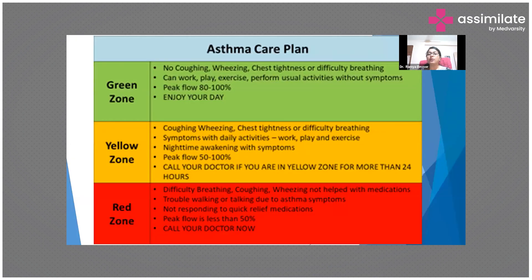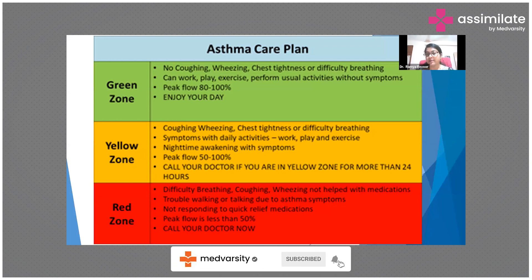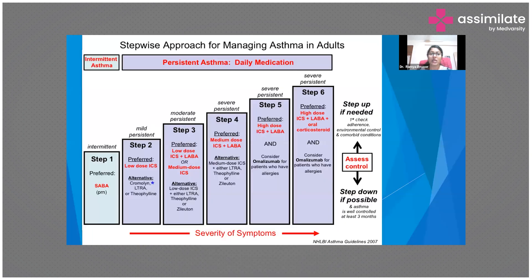For the asthma care plan based on zones: green zone means peak flow is 80–100% of personal best — the patient is doing well and can have a normal day. Yellow zone means some cough, wheezing, or nighttime awakening — if readings stay in the yellow zone for more than 24 hours, the patient should contact their doctor. Red zone means difficulty breathing and poor response to relief medication — the patient must go to hospital immediately.